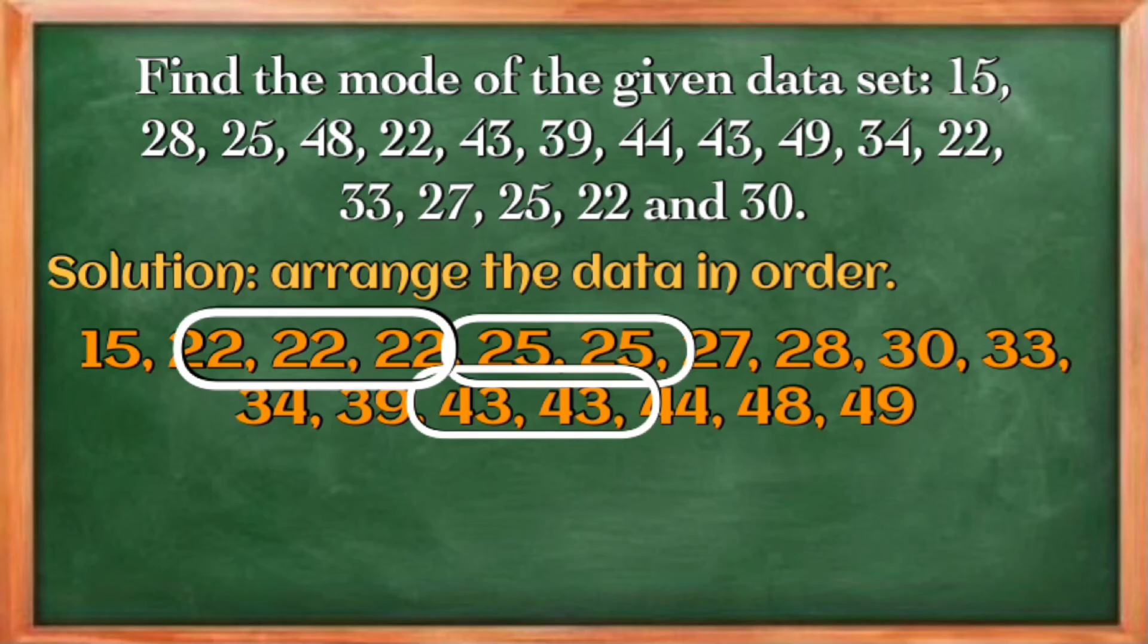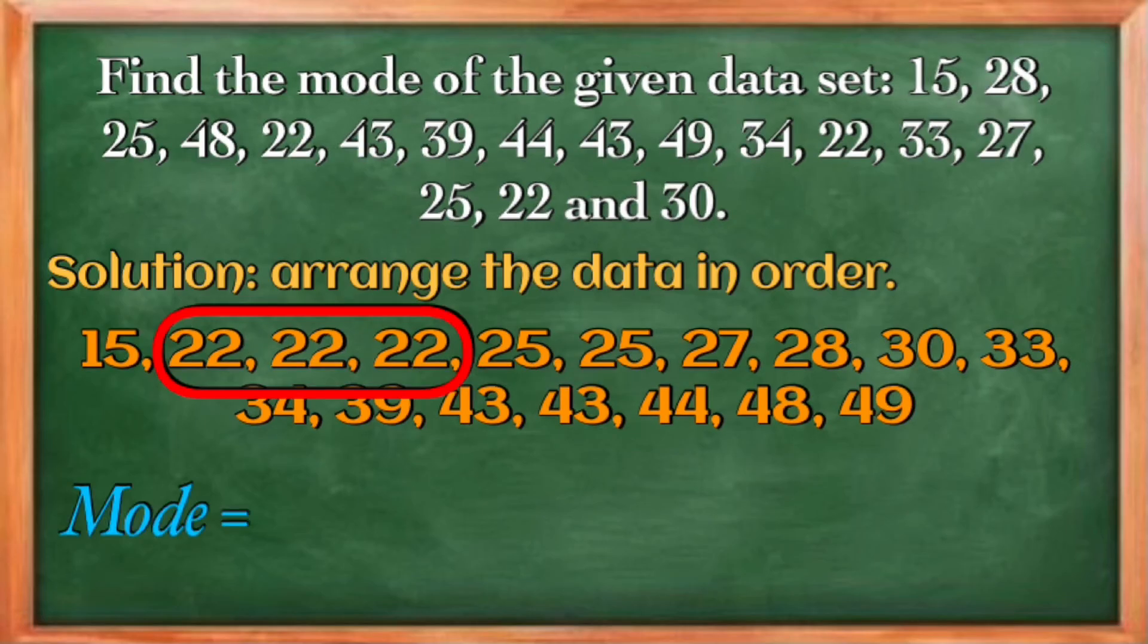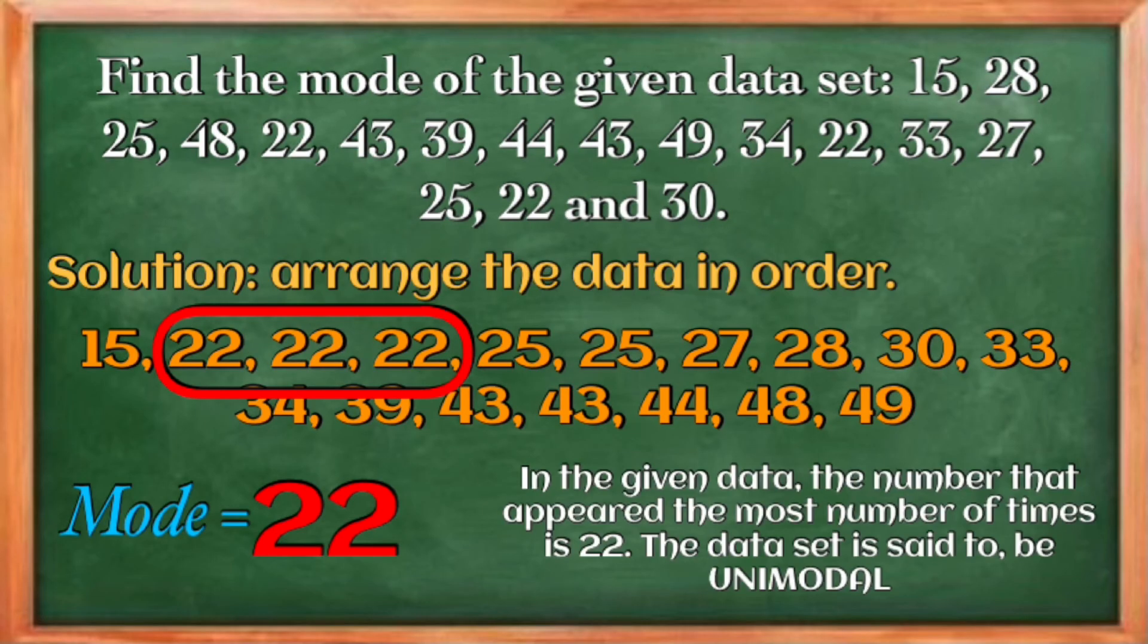The frequency of 2 is 3, the frequency of 5 is 2, and we have the frequency of 43 is also 2, and the rest we have only 1. So it's clearly stated here that 2 has the frequency of 3, and it is the data who has the highest frequency. Therefore, the mode is 2. In this case, we only have one mode, so this is known to be a unimodal data set.